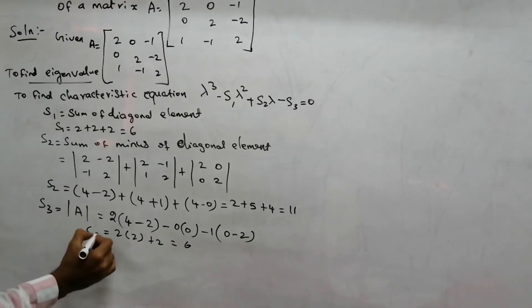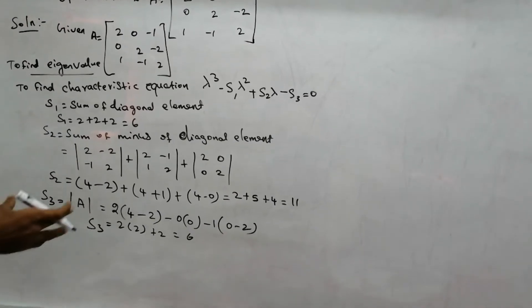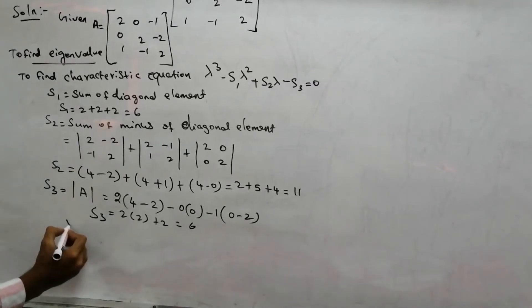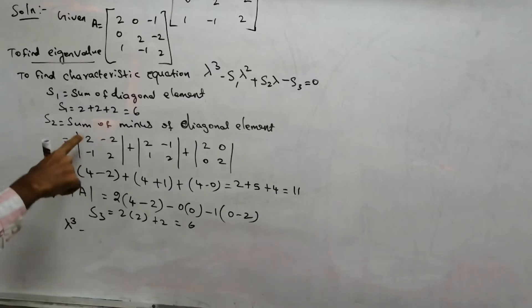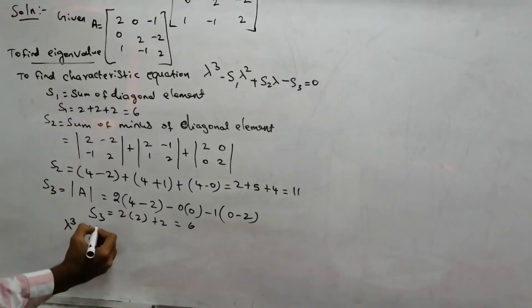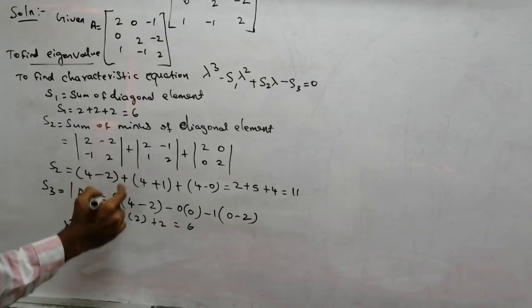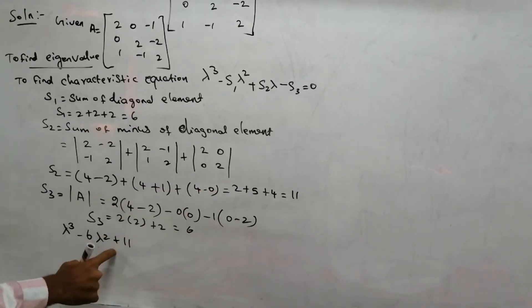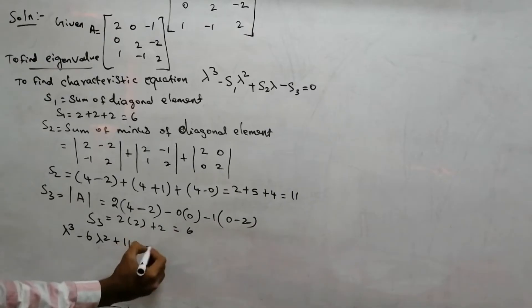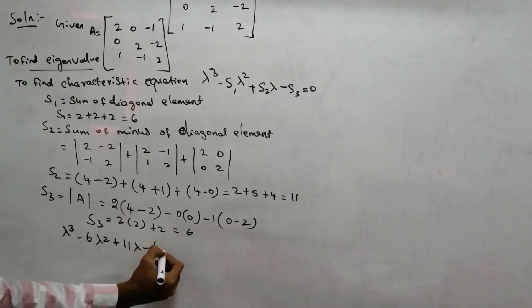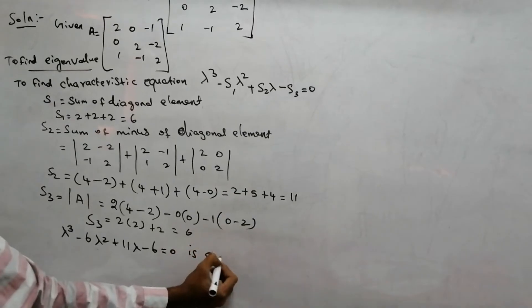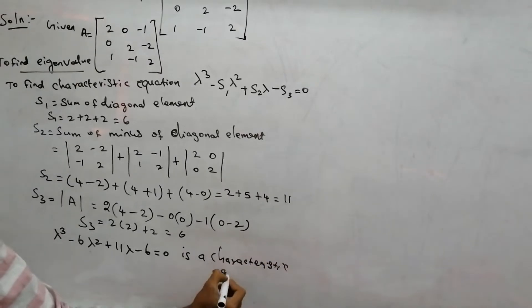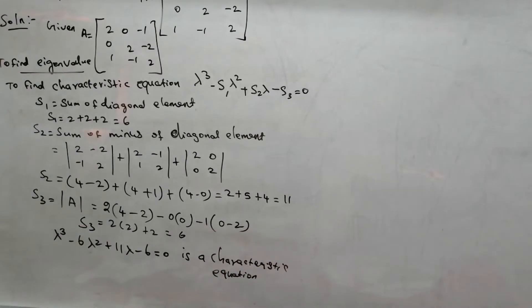Now we have s1, s2, and s3. s1 is 6, s2 is 11, and s3 is 6. So the characteristic equation becomes: lambda cubed minus 6 lambda squared plus 11 lambda minus 6 equals 0. This is the characteristic equation.